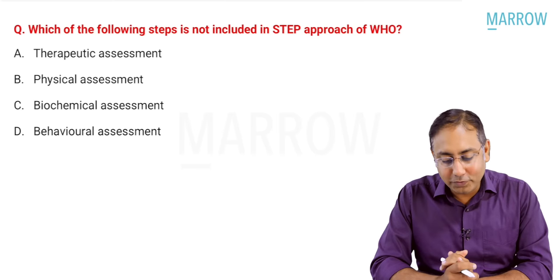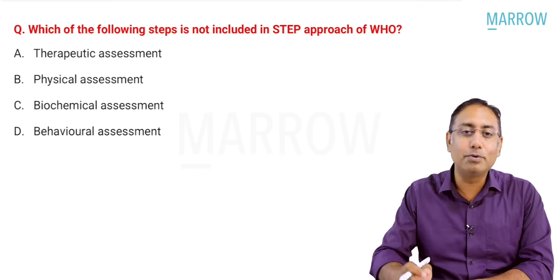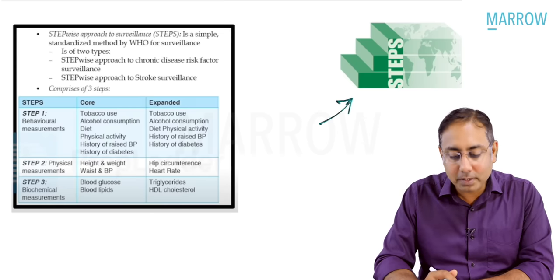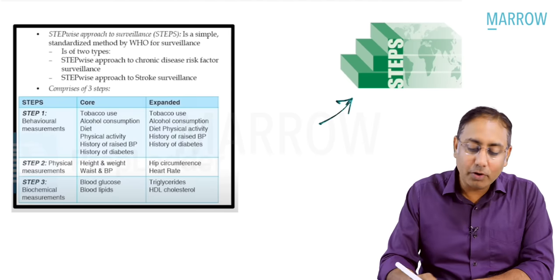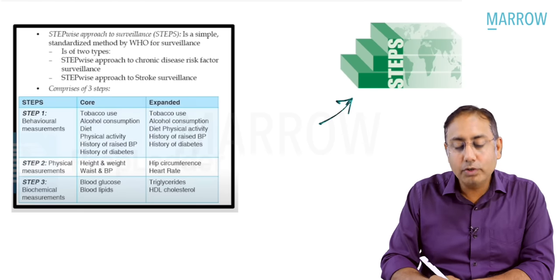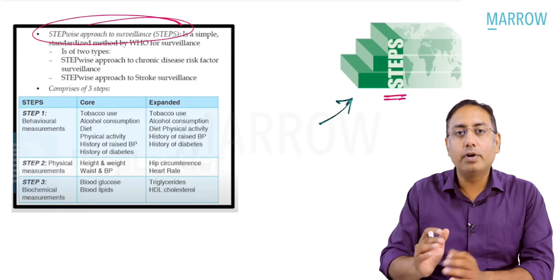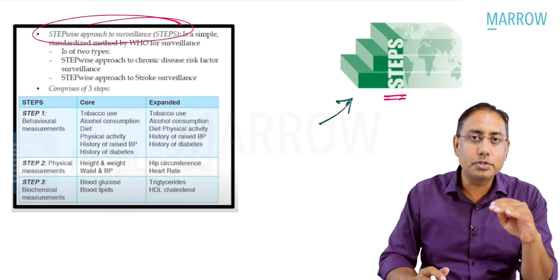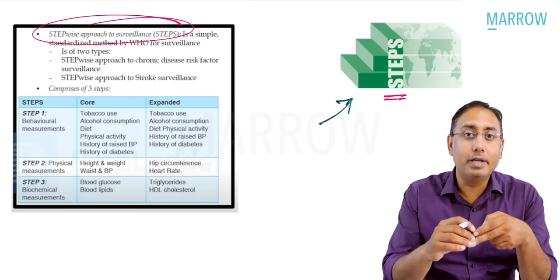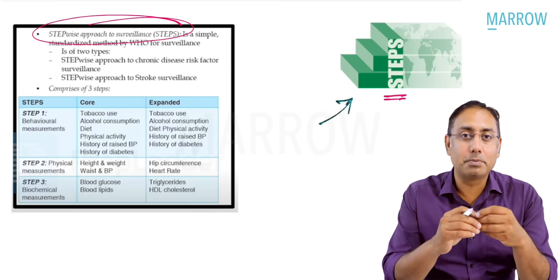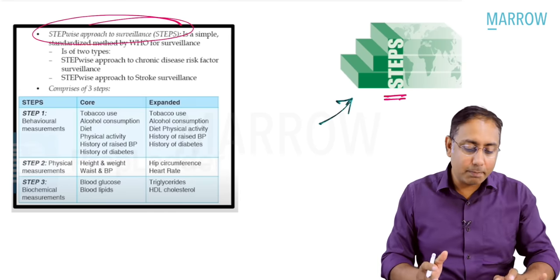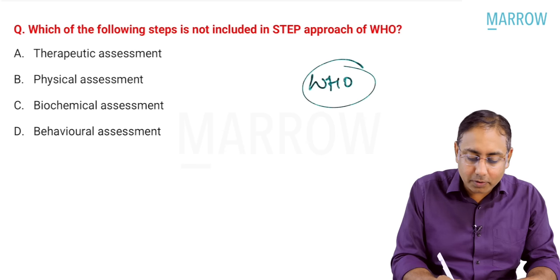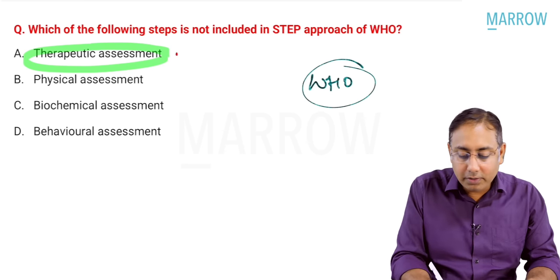The first MCQ: which of the following steps is not included in the STEPS approach by the WHO? The WHO started a STEPS approach — Stepwise Approach to Surveillance — to prevent non-communicable diseases. Under this approach, there are three categories: physical measurements, behavioral measurements, and biochemical measurements. The best answer is 'therapeutic assessment,' which is not part of the STEPS approach.